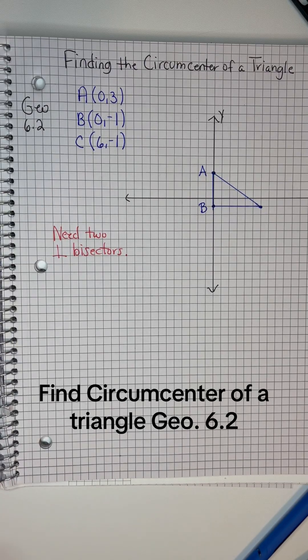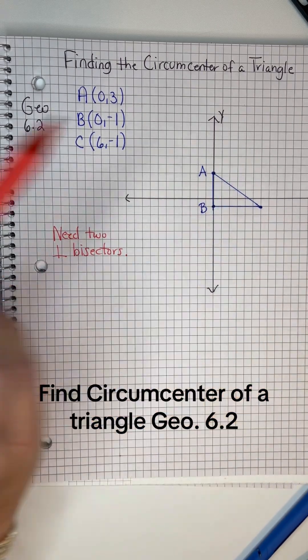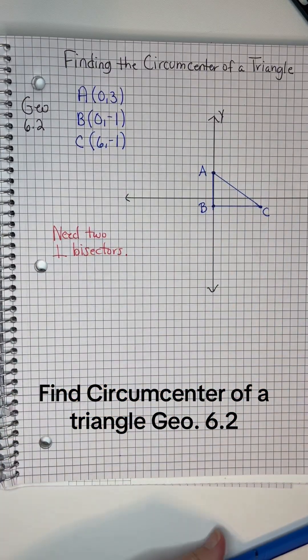If they give you a coordinate plane and ask you to find the circumcenter of a triangle, it's really fortunate if it happens to be a right triangle. And this one does. Here are the ordered pairs and here it is graphed.